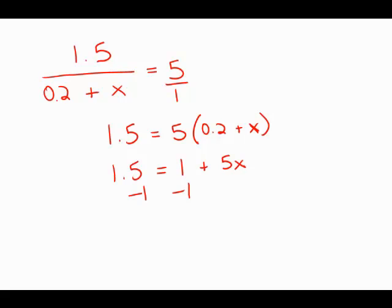Subtract 1 from both sides; we get 0.5 equals 5x. Now divide both sides by 5. 0.5 divided by 5 is 0.1, and that's what x equals. This is answer choice B.